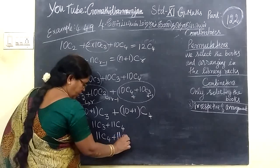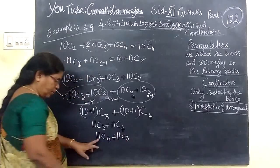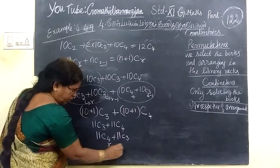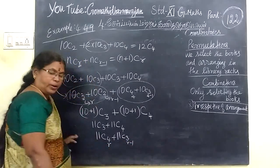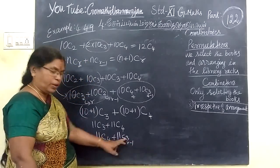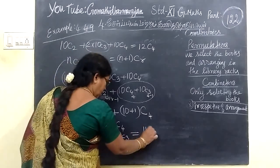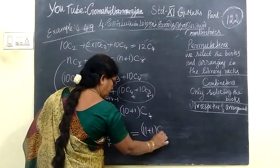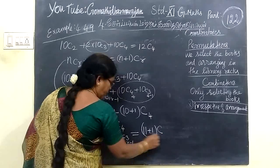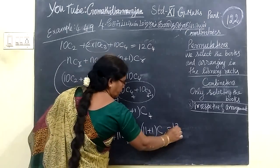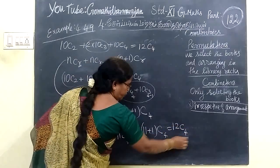Plus 11C3. This is R, this is R-1. So this is nothing but 11 plus 1, C R, R is 4. So this is equal to 12C4.